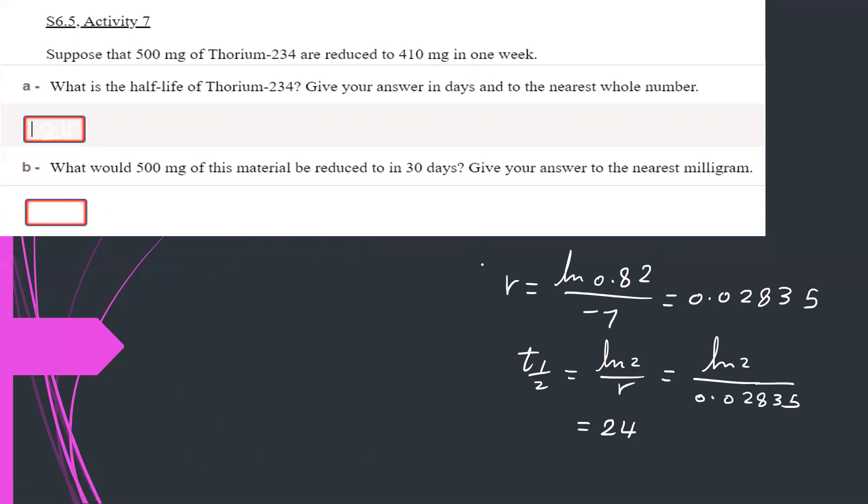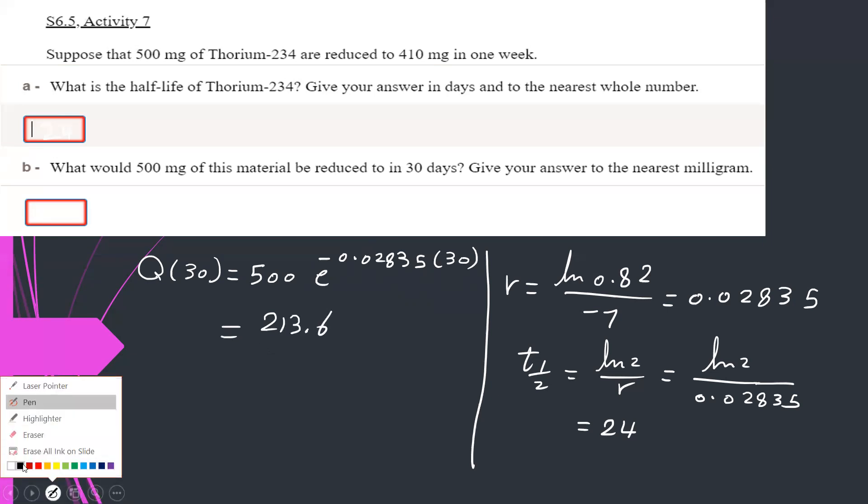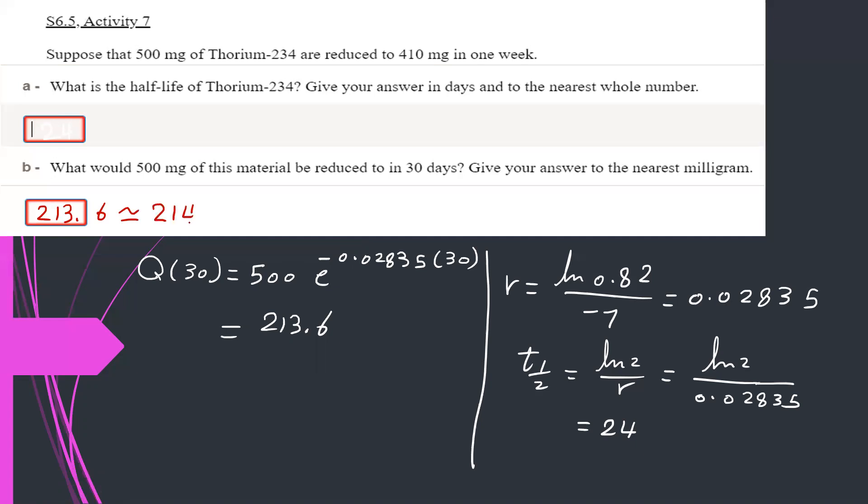Number B, what would 500 milligrams of this material be reduced to in 30 days? Give your answer. So, Q after 30 days is equal to the initial amount is 500 milligrams times e to the negative r. The r is 0.02835 times 30 days. Only substitute in the formula and solve this amount. The answer is 213.6. So, simply, you can write the answer here, 213.6, about 214 milligrams.